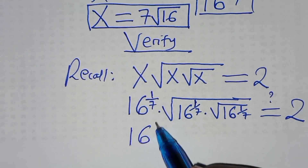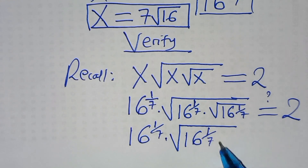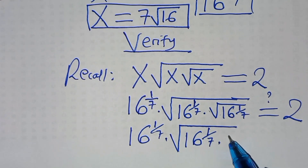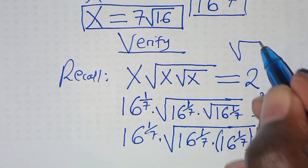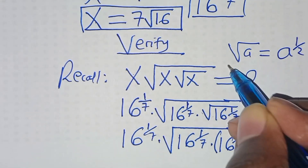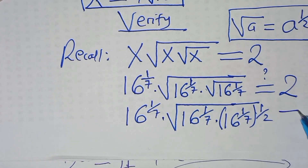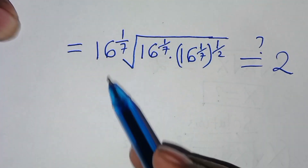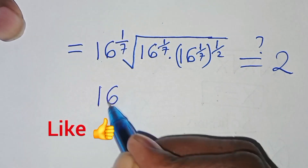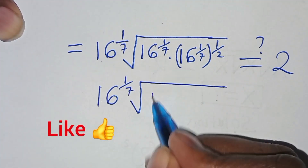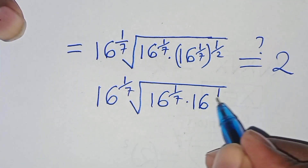Now we have 16 raised to power 1 over 7. We can express the square root of 16 to power 1 over 7 as 16 raised to power 1 over 7, then times a half — because the square root of a is the same thing as a to the power a half. So applying this property, we have 16 raised to power 1 over 7, raised to power a half. This should give us a value of 2. So now we have 16 raised to power 1 over 7, times 16 raised to power 1 over 7, times 16 raised to power 1 over 14 — since 1 over 7 times 1 over 2 equals 1 over 14. This should give us a value of 2.